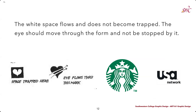On the left, we can see that when a heart is positioned inside a square, it feels trapped within the space. But looking at the option on the right, by putting in lines that create eye movement flowing through the mark, it creates a much more positive and negative relationship within the space. We can see this being used within the Starbucks logo or even the USA Network.